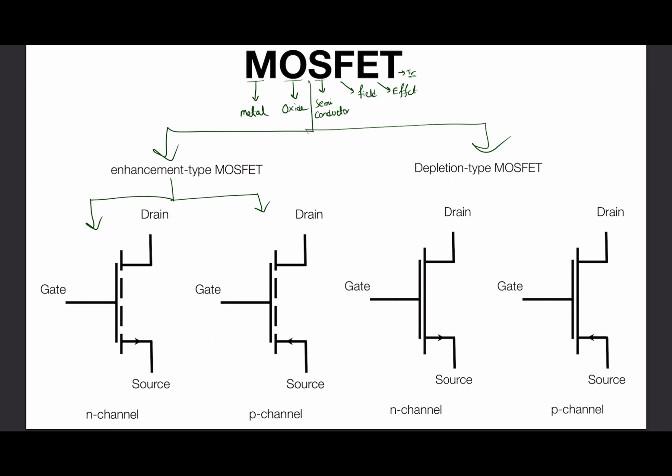In the depletion type, there is also an N-channel and a P-channel. In the N-channel enhancement type MOSFET, you can see the channel is not created yet — that's why it's called enhancement type. In the depletion type MOSFET, the channel is already created, which is why it appears as a continuous line. For the N-channel, the arrow is outward, and for the P-channel, the arrow is inward. By looking at the circuit symbol you can easily distinguish the enhancement type from the depletion type.